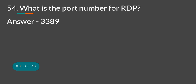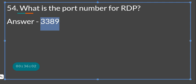For entry-level jobs you need to know the most commonly used port numbers. For example, RDP runs on port 3389 over TCP. Know others too: FTP is port 21, DNS is port 53. You may need to memorize 15 to 20 common ports for an interview, and also know whether each runs on TCP or UDP.